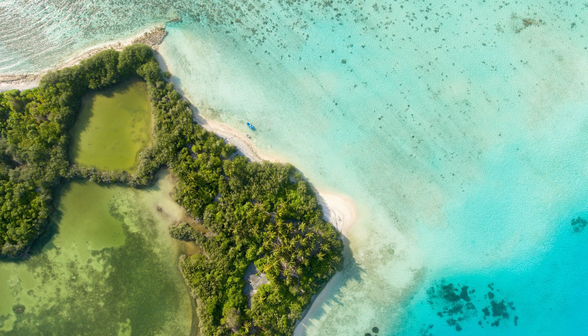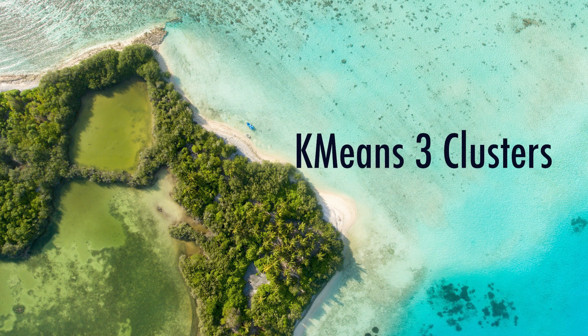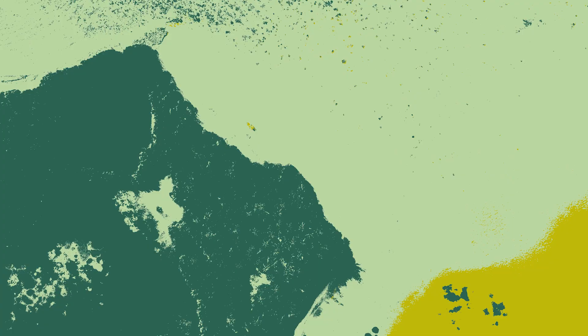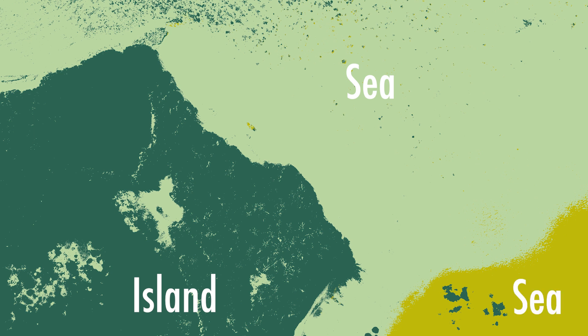We are now going to segment the image of a beach using k-means into three clusters. After segmenting the image, the three clusters are somewhat imprecise but clearly show the island, the bluish sea, and another part of the sea. This is overall a good clustering result.